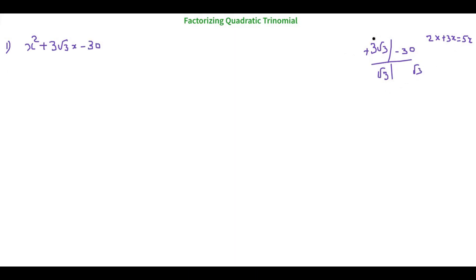Now we need 3 here — which two numbers do we add or subtract to get 3? We can take 2 and 5. 5 minus 2 is 3. Because 3 is a positive number I will put a positive sign for the bigger number and a negative sign for the smaller number. Now let's see whether it works for multiplication.